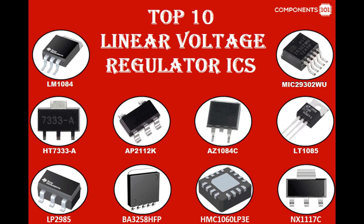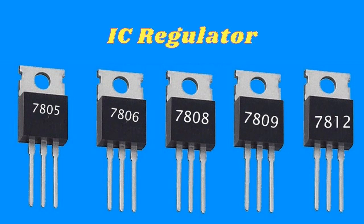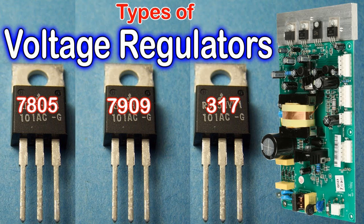Reverse polarity protection: Some voltage regulator ICs incorporate reverse polarity protection to prevent damage caused by connecting the input voltage with the wrong polarity. Reverse polarity protection circuits typically include diodes or MOSFETs that block current flow when the input voltage is reversed. Short circuit protection prevents damage to the regulator and the load in the event of a short circuit, involving current limiting mechanisms that detect excessive current flow and quickly shut down the output. Under voltage lockout (UVLO) prevents the regulator from operating when the input voltage falls below a certain threshold, avoiding unreliable operation or damage when the input voltage is too low.